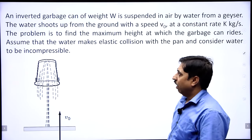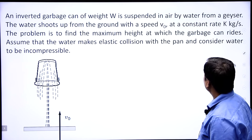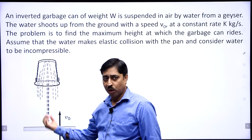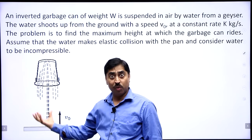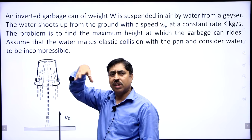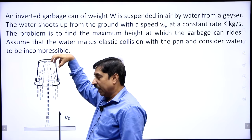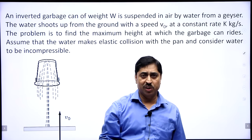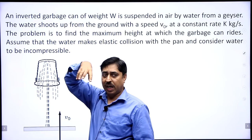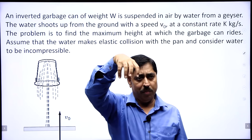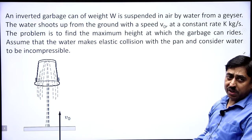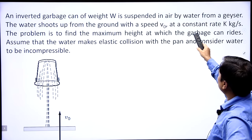Hello students, today I am here to discuss one simple problem from fluid mechanics. An inverted garbage can of weight W is suspended in air by water from a geyser. There is a geyser throwing water upward, and a stream hits a garbage can — just a plastic bucket kind of thing — which remains at height h due to the force applied by the gushing water. The can remains in equilibrium at a certain height from the ground.